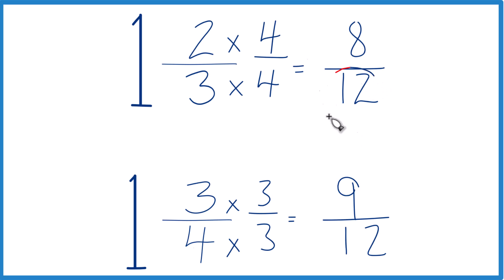But now, same denominator, let's just compare the numerators, and we'll know if 1 and 2 thirds is greater than, less than, or equal to 1 and 3 fourths. 9 is greater than 8, so 9 twelfths, that's greater than 8 twelfths. Only by 1 twelfth, but it's larger.